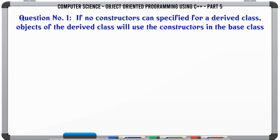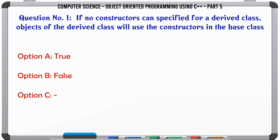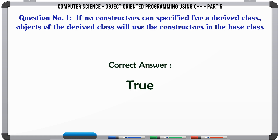If no constructors are specified for a derived class, objects of the derived class will use the constructors in the base class. A. True. B. False. The correct answer is: True.